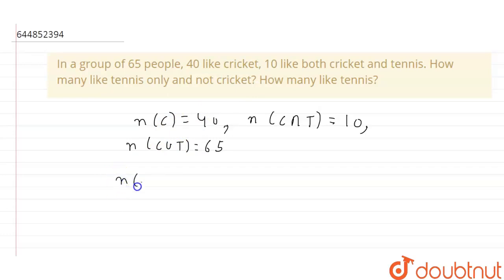So T only, it will be n(C∪T) minus n(C). So C union T is 65 minus 40, which is 25. Okay, so now we have to find out how many like tennis.